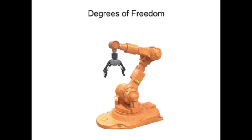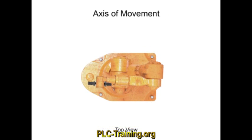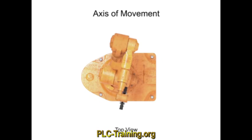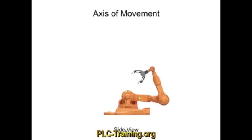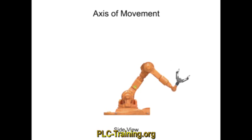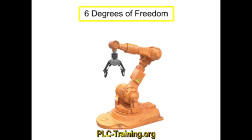Robots come in all different shapes and sizes, but are frequently classed by their degrees of freedom. Each direction of movement on the robot is considered an axis of movement. This robot rotates at the waist, bends forward and back at the shoulder, and moves vertically at the elbow. Each single movement axis is equal to one degree of freedom.